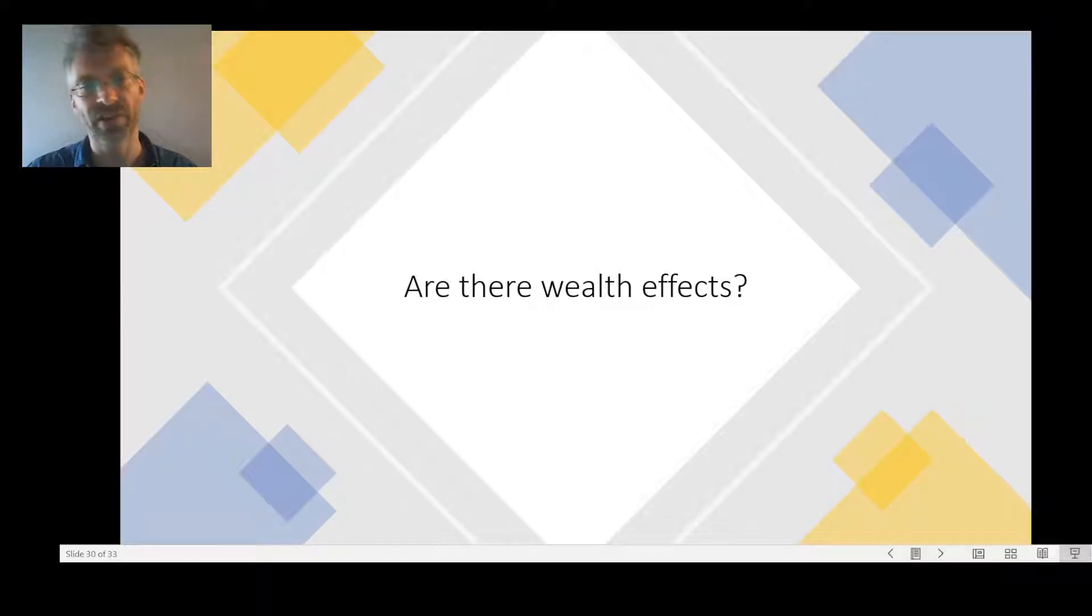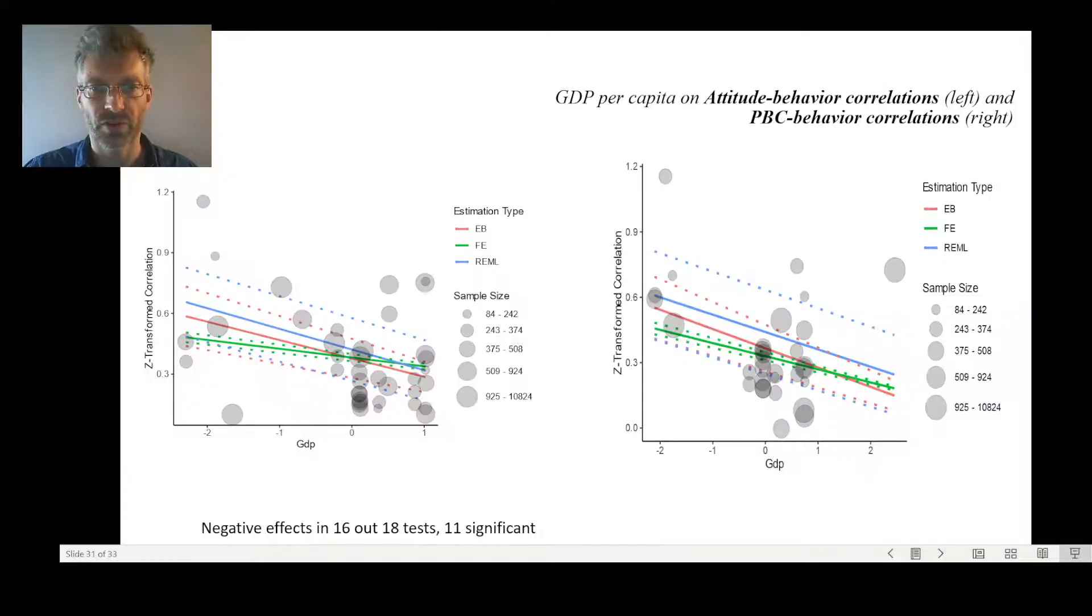Are there wealth effects? And in which direction do they go? It seems actually wealth across the board limits the ability of the theory of planned behavior to predict intentions and positive behaviors. So it seems to support this notion of a false sense of security in higher-income contexts.